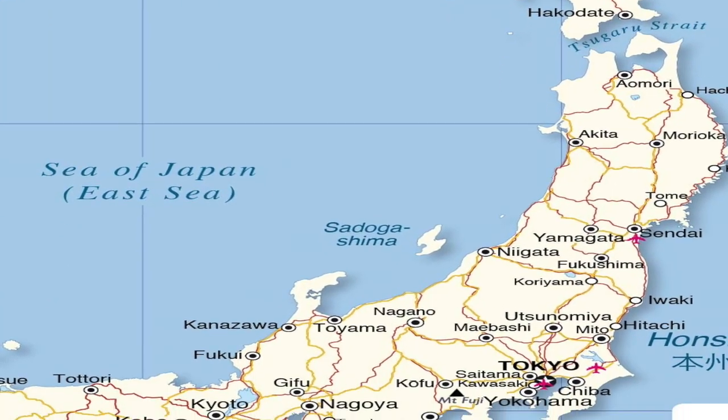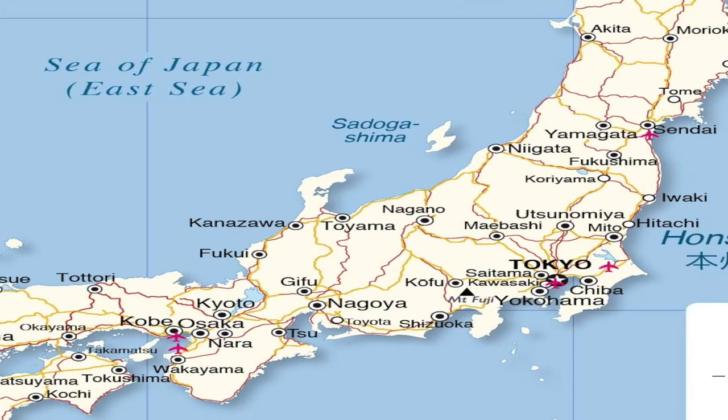An archipelago is — think of it like a chain of islands that belong to one country. For example, think of a place like Japan: it's like a chain of islands, a cluster. Japan, Indonesia, the Philippines — if you've ever seen the map, it seems like a lot of pieces, a lot of islands very close together. That's an archipelago: a lot of islands surrounding each other.